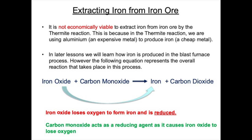The thermite reaction does have uses — for example, it's used to repair railway tracks. If there is a crack in a railway track, all you have to do is put some aluminium and iron oxide into that crack, light a magnesium fuse, and the thermite reaction takes place. Liquid molten iron forms, pours into the crack, cools down, solidifies, and you've repaired your railway line. The thermite reaction is often used in exam questions because it's a great example of a more reactive metal, aluminium, kicking out a less reactive metal, iron, from a compound.